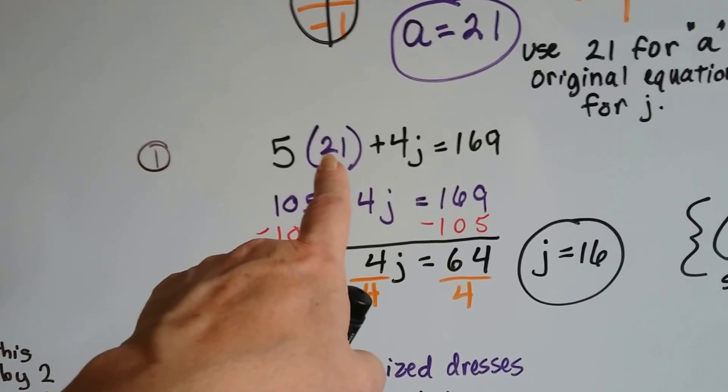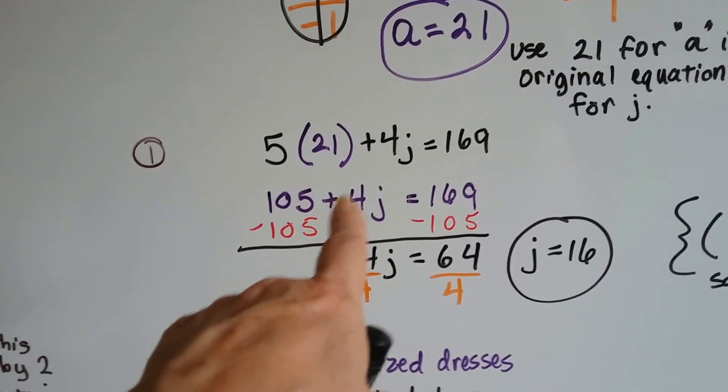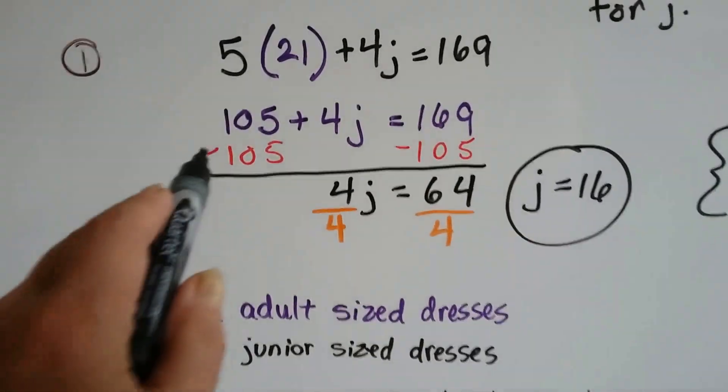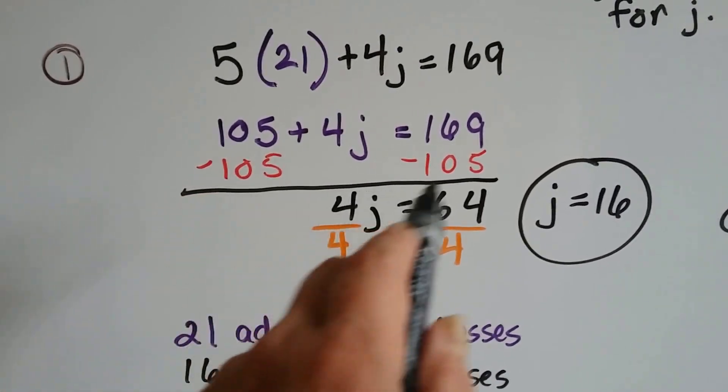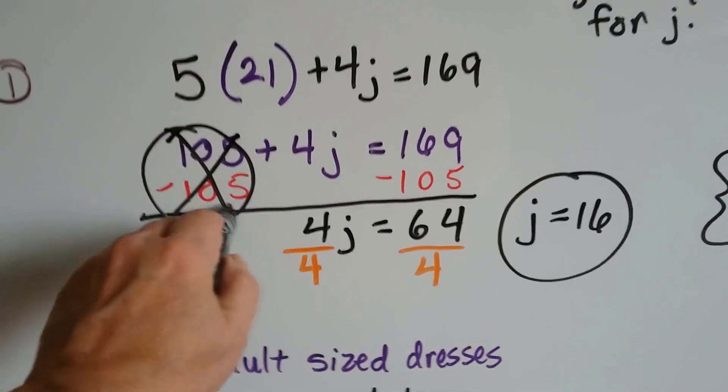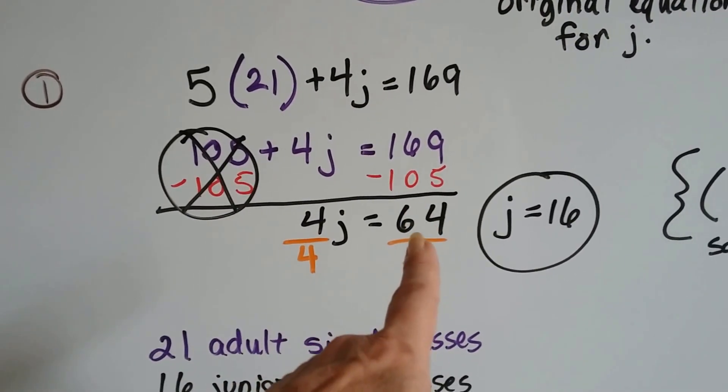5 times 20 is 100. And 5 times 1 is 5. So that's 105. Plus the 4J equals 169. Now we can subtract 105 from each side. And that'll create a zero pair here. And that'll get the 4J by itself. And 169 take away 105 is 64.